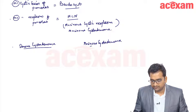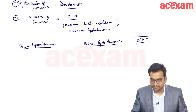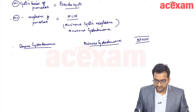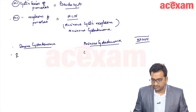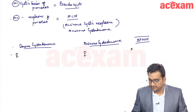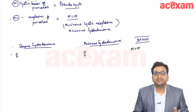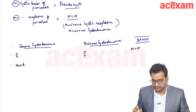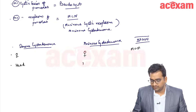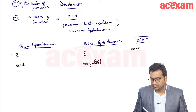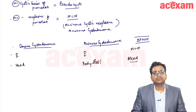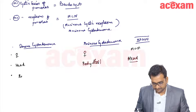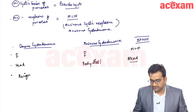Serous cyst adenoma is more common in females. Mucinous cyst adenoma is also more common in females. In IPMN it is equally common in both male and female. Serous cyst adenoma is seen more in the head region, mucinous cyst adenoma is seen mainly in the body and tail region, and IPMN is also seen in the head and uncinate process.